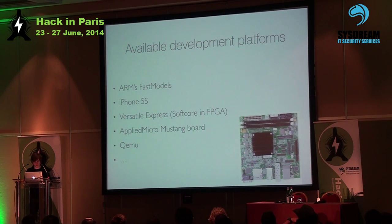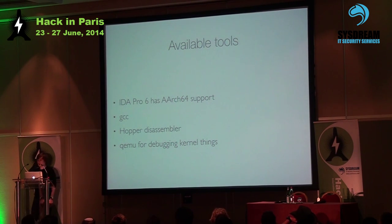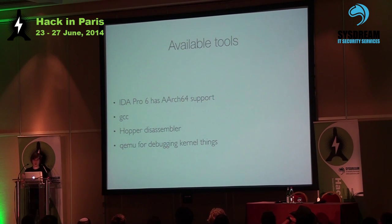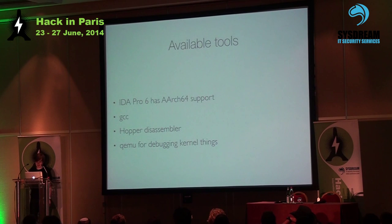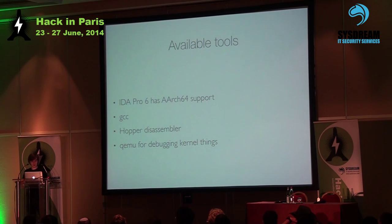If you want to analyze or generate binaries and reverse engineer existing ARM64 code, most tools are already up to it. In IDA Pro 6 there was an update that now supports ARM64-bit. GCC can generate and objdump can disassemble the code. The Hopper disassembler, a very nice and cheap alternative to IDA Pro, has limited but working ARM64 support. And if you want to debug something or test shellcode, you can just run it in QEMU in no time.